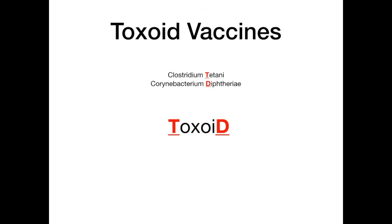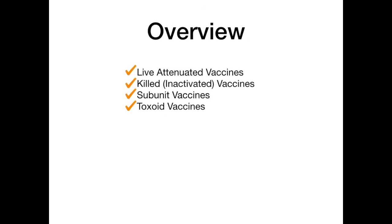There you go — you now know the four different types of vaccines: live attenuated, killed (also known as inactivated), subunit, and toxoid. If you're going to learn one thing from this video, know the different examples and which category they fall into. But if you want to be a knowledgeable physician, know everything covered here. Click the link in the description, sign up to be a patron of Dirty Medicine. Good luck.